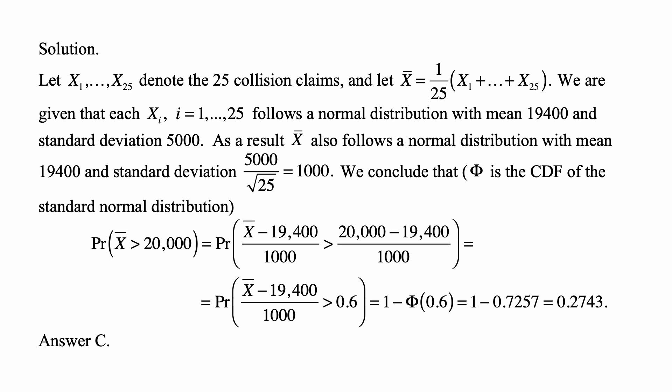And then we look at the probability that x-bar is greater than 20,000. We reason this way: that x-bar minus its mean divided by 1,000 has to then be greater than 20,000 minus 19,400 over 1,000. That right-hand side is equal to 0.6.